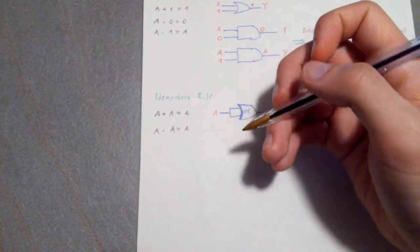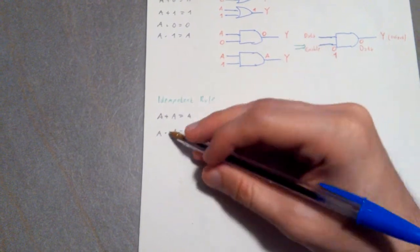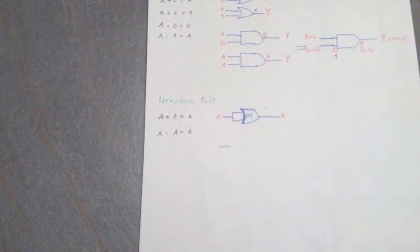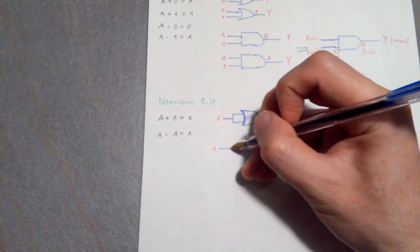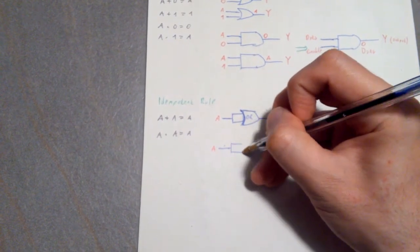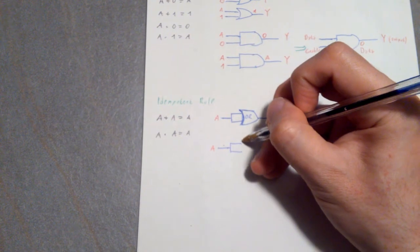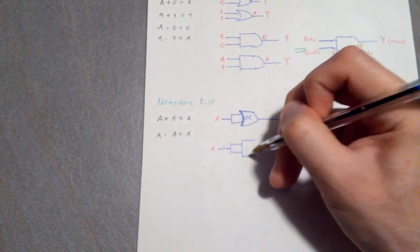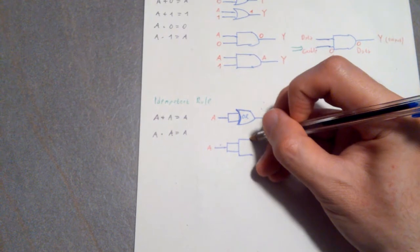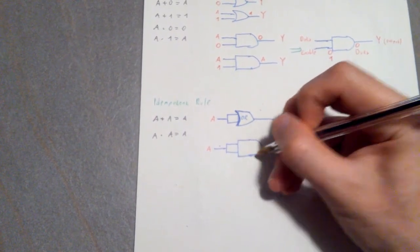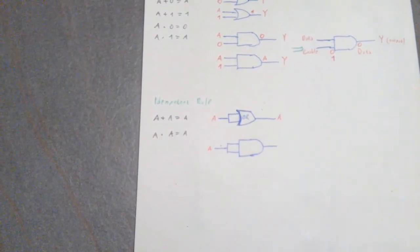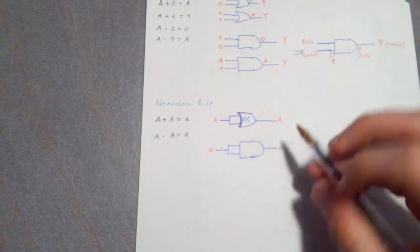And the same is valid for the AND gate here. So if you have A as an input, and the two inputs of your AND gate are tied together, because it's just really one input A. So here you have your AND gate, and then the output in this case as well is going to be A.